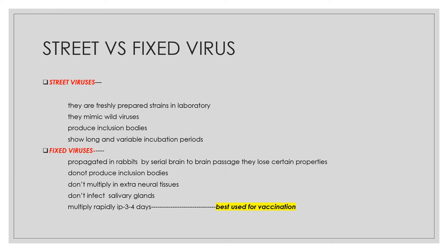Rabies virus has two important types: street viruses and fixed viruses. Street viruses are freshly isolated strains that mimic wild viruses, produce inclusion bodies, and have a long and variable incubation period. Fixed viruses are street viruses propagated by serial brain-to-brain passage; they lose certain properties — they don't produce inclusion bodies, don't multiply in external tissues, don't infect salivary glands, and multiply rapidly in 3–4 days. Fixed viruses are best used for vaccination.